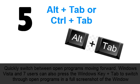5. ALT plus TAB or CTRL plus TAB. Quickly switch between open programs moving forward. Windows Vista and 7 users can also press the Windows key plus TAB to switch through open programs.